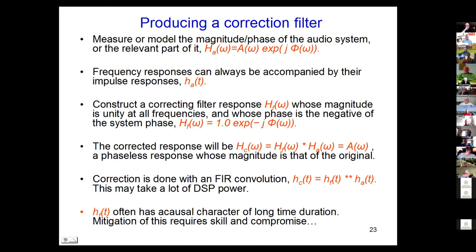We can construct a correcting filter H of f whose magnitude is one at all frequencies and whose phase is the negative of that signal. The corrected transfer function will be the correcting filter multiplied by the audio system frequency response. This exponential will be canceled, and all we'll have left is the gain of the system as a function of frequency, which is phaseless. This is done in the frequency domain mentally, and in the time domain it's a convolution.